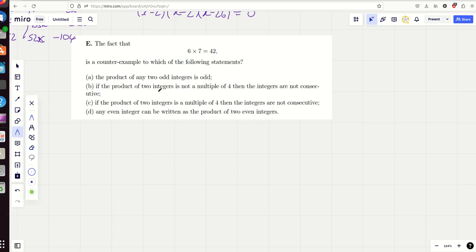If the product of two integers is not a multiple of 4, ours isn't a multiple of 4, then the integers are not consecutive. Well, these are consecutive, so it's B, that must be your counterexample.